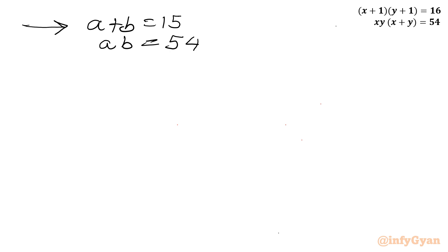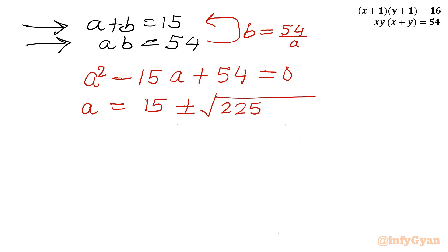So this is sum of roots, this is product of roots. Let us frame one quadratic equation whose roots are a and b. I will write it in variable a: a squared minus 15a plus 54 equals 0. Let us solve this using quadratic formula. So a will be equal to 15 plus or minus the square root of (225 minus 216) divided by 2.